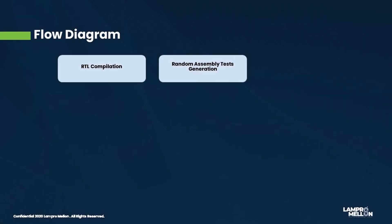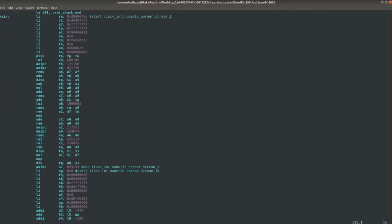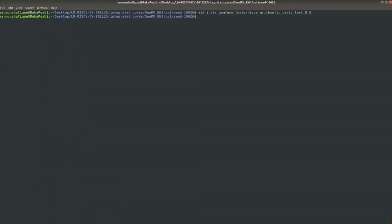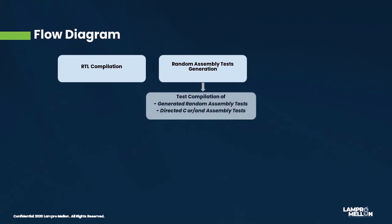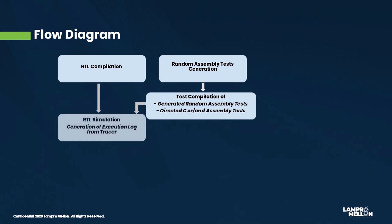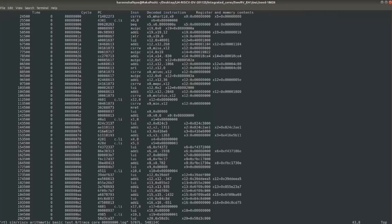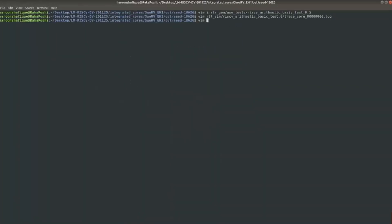The environment flow begins either from RTL compilation or test generation. After the random tests are generated, they are compiled into binary and hex files which are needed for RTL simulation. If you want to run a directed test, then you only need to compile the test. Once the RTL and tests are compiled successfully, hex files are loaded into the memory and instructions are executed on the core. During simulation, an execution log is generated with the help of a tracer.